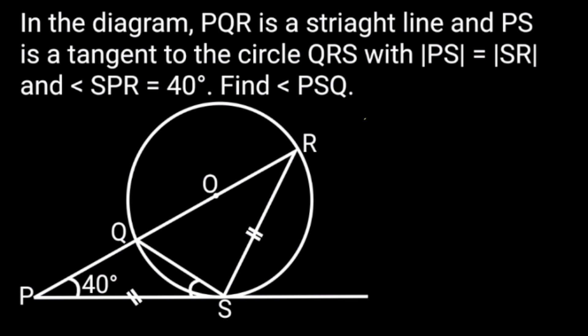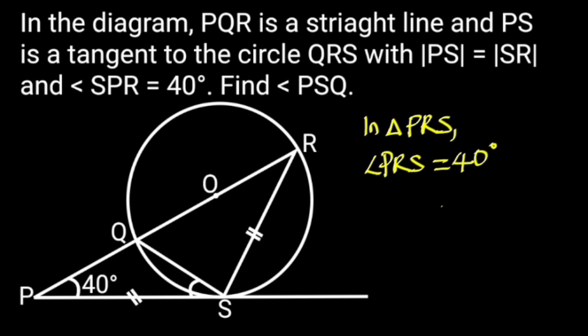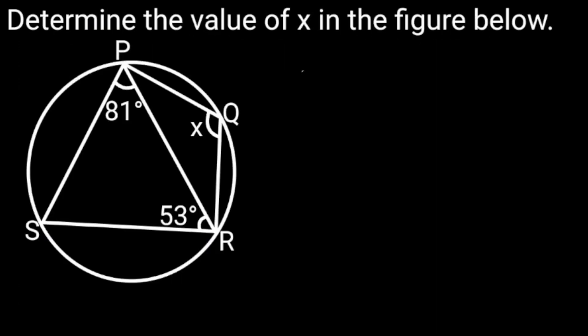In the diagram, PQR is a straight line and PX is a tangent to the circle QRS, with PS equals SR and angle SPR equals 40 degrees. Find angle PSQ. Solution: In triangle PRS, angle PRS equals 40 degrees. Reason: Base angle of isosceles triangle. Hence angle PSQ equals angle PRS, which is 40 degrees. Reason: Angle in alternate segment.